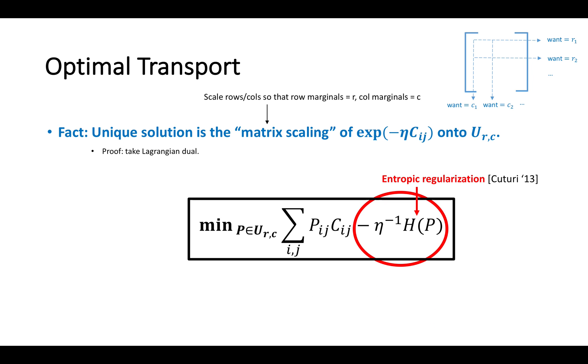A key fact is that the solution to this regularized problem can be computed by solving an auxiliary matrix scaling problem. This amounts to scaling the rows and columns of a certain matrix, so that its resulting marginals match the desired marginals R and C.